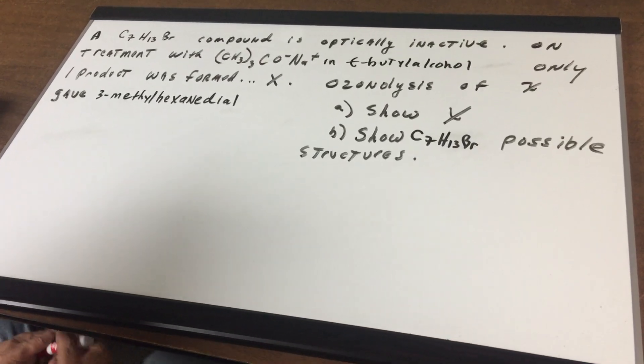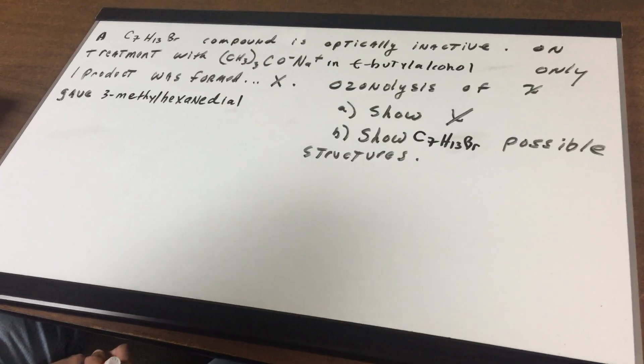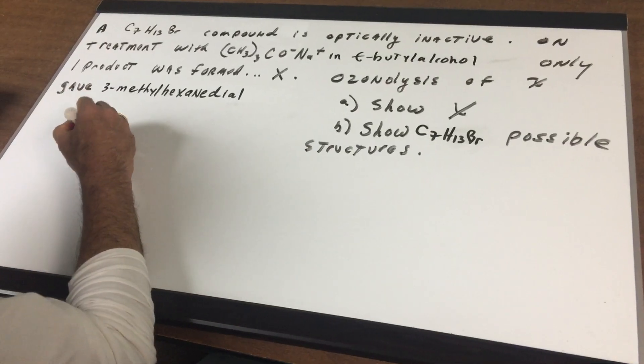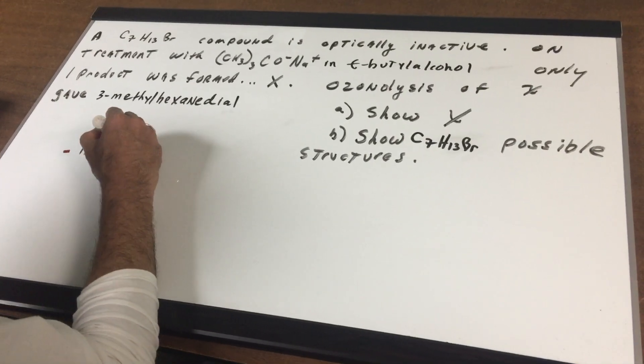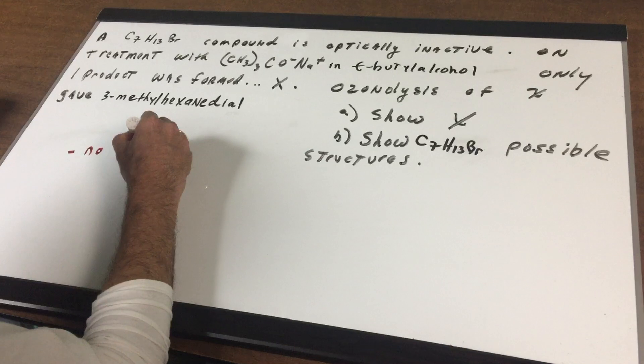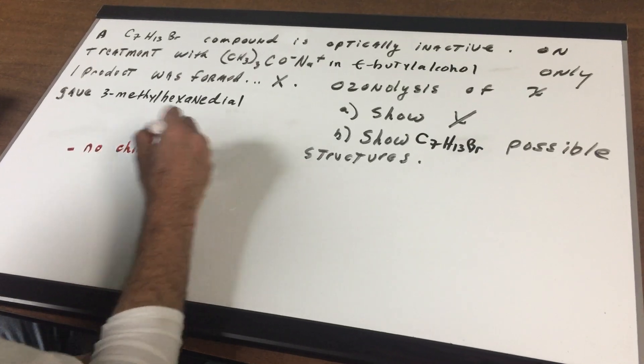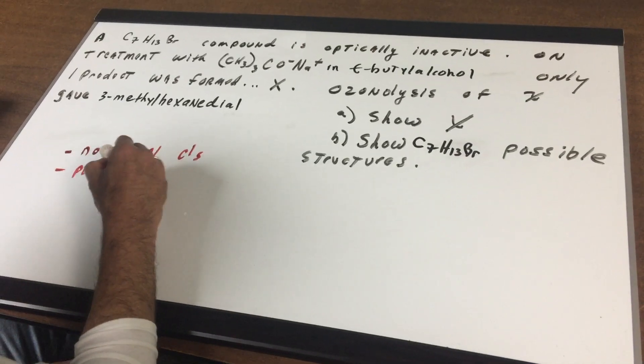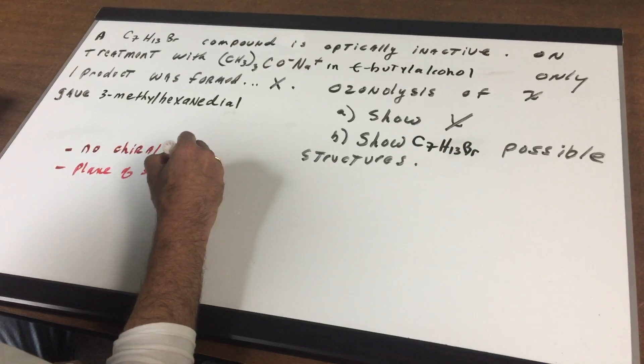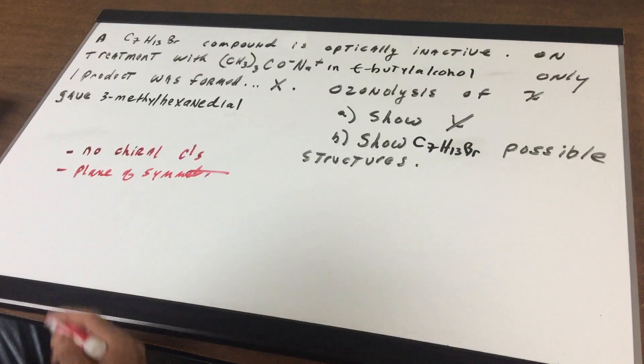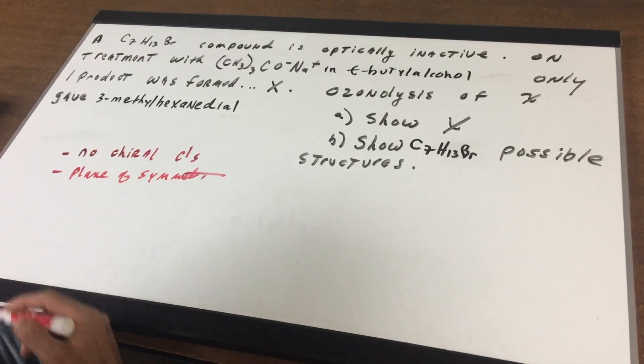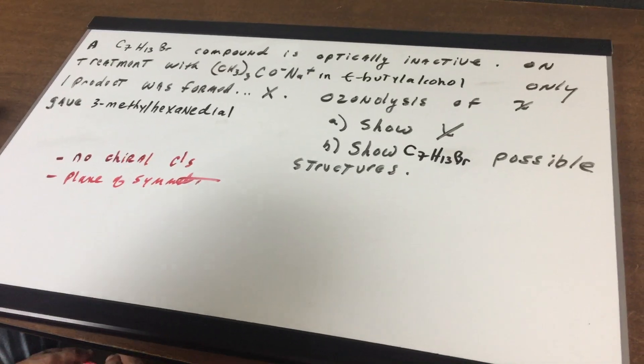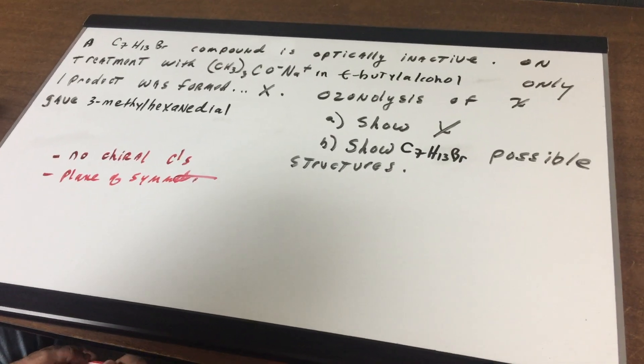What I want to do is for you to show me what is the product X and show me some possible structures for the starting compound. First of all, the minute I see it's optically inactive, inactive would mean that there is no chiral carbons. There's no chiral carbons and you're going to look for a molecule with a plane of symmetry. So that off the bat should help you eliminate some of the choices.